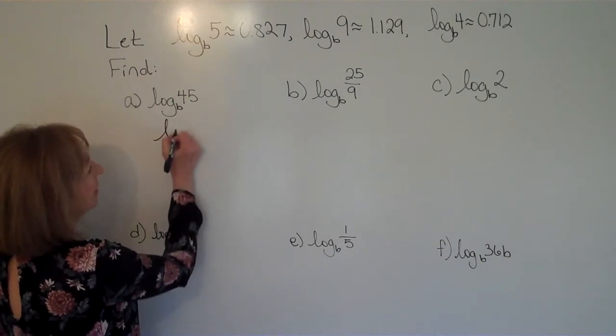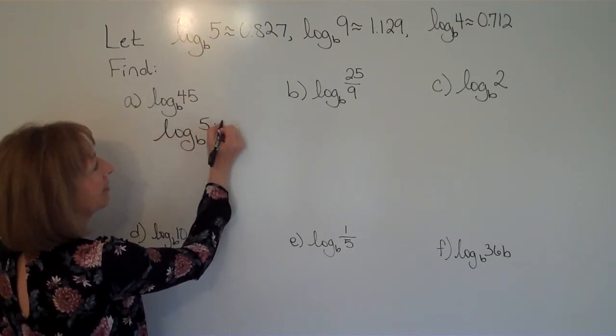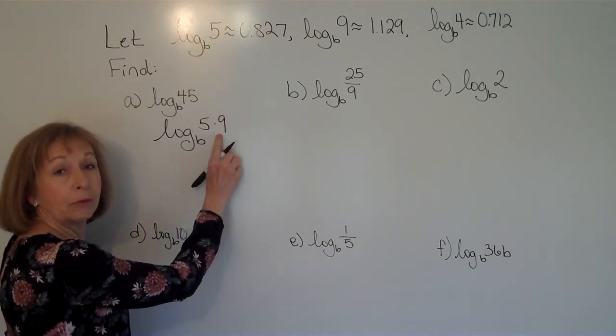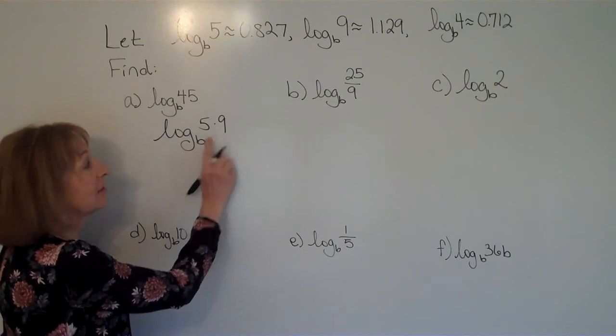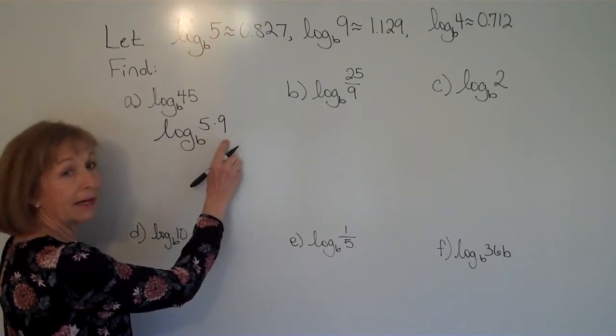So I can write this as the log base b of 5 times 9. And then when I have the logarithm of a product, that is the logarithm of the first factor plus the logarithm of the second factor.